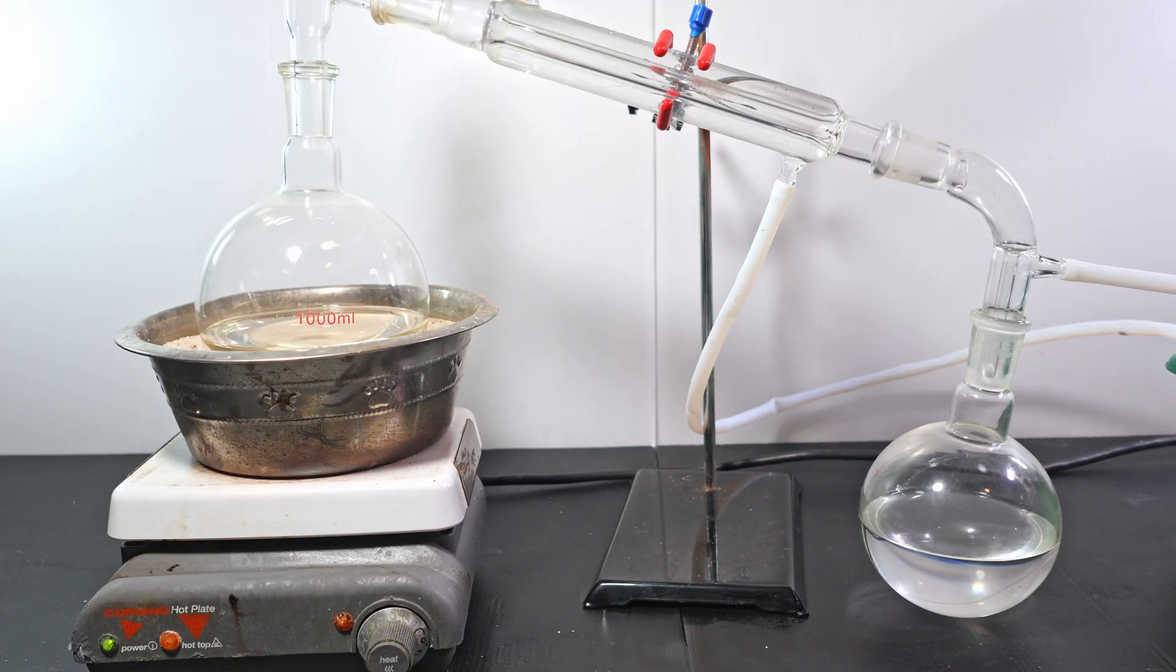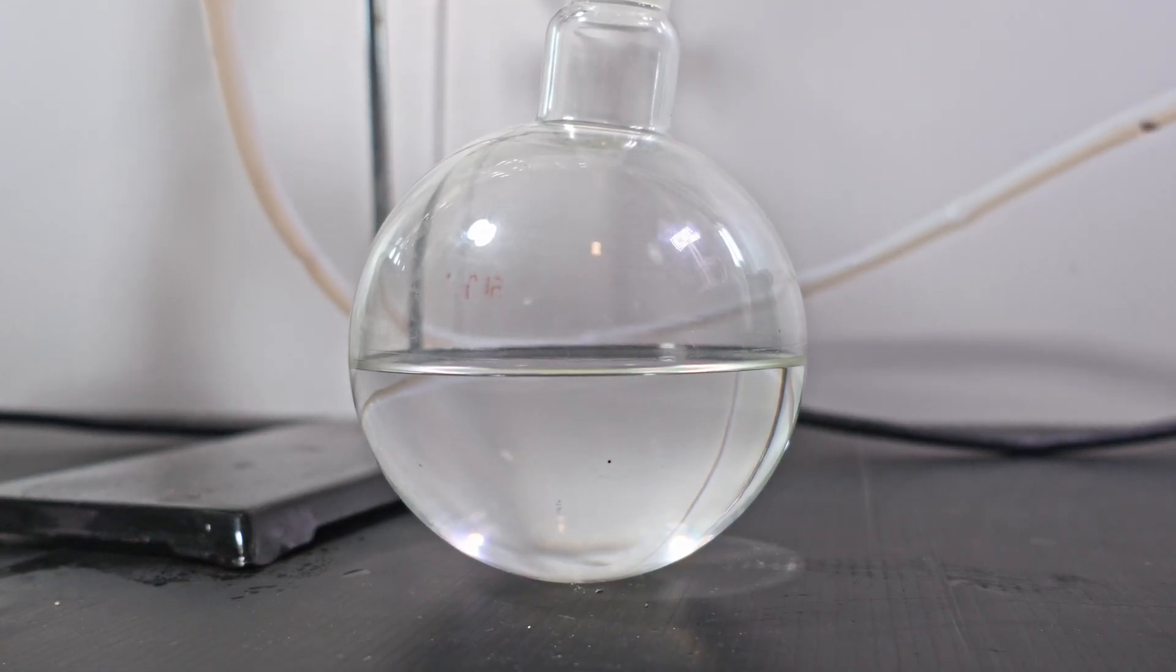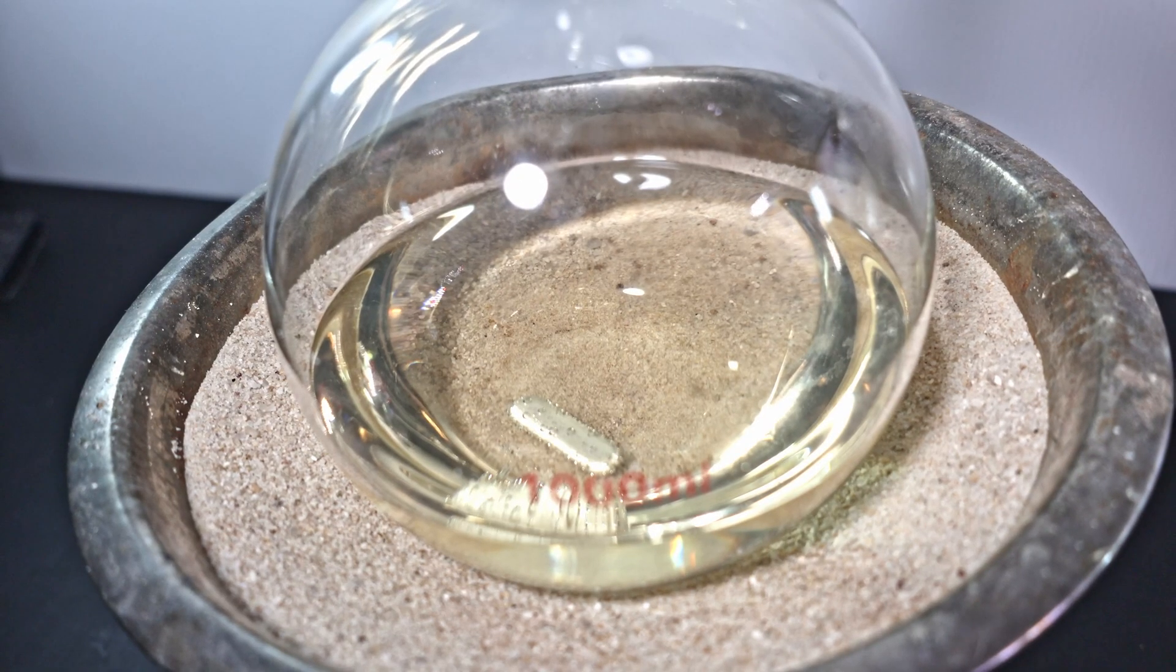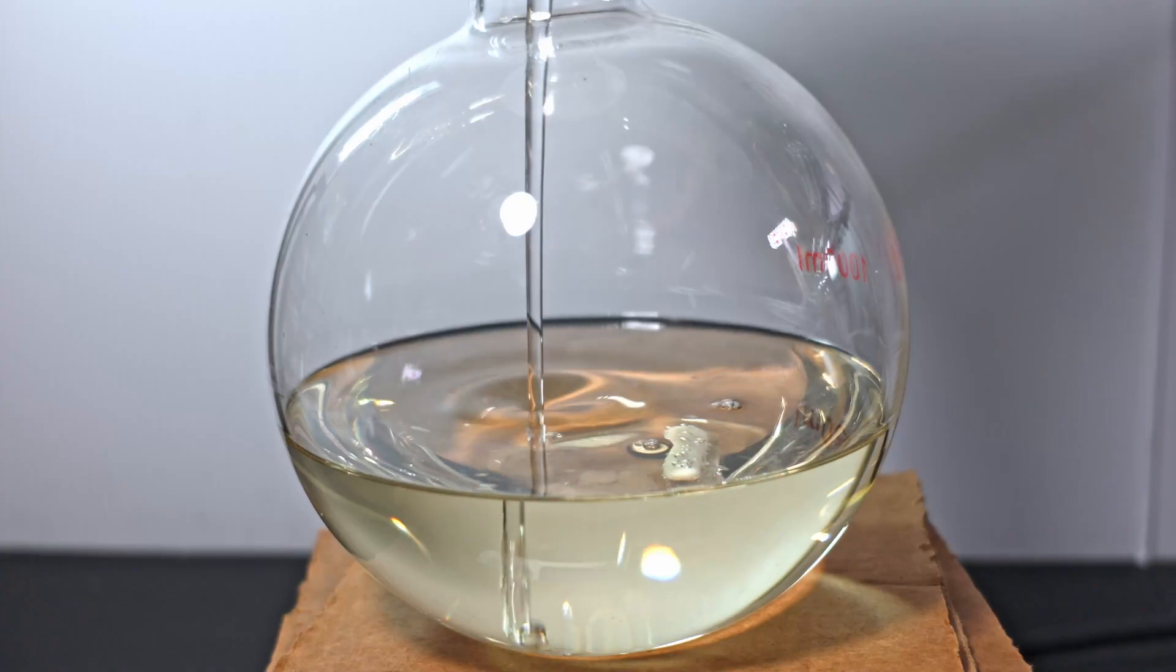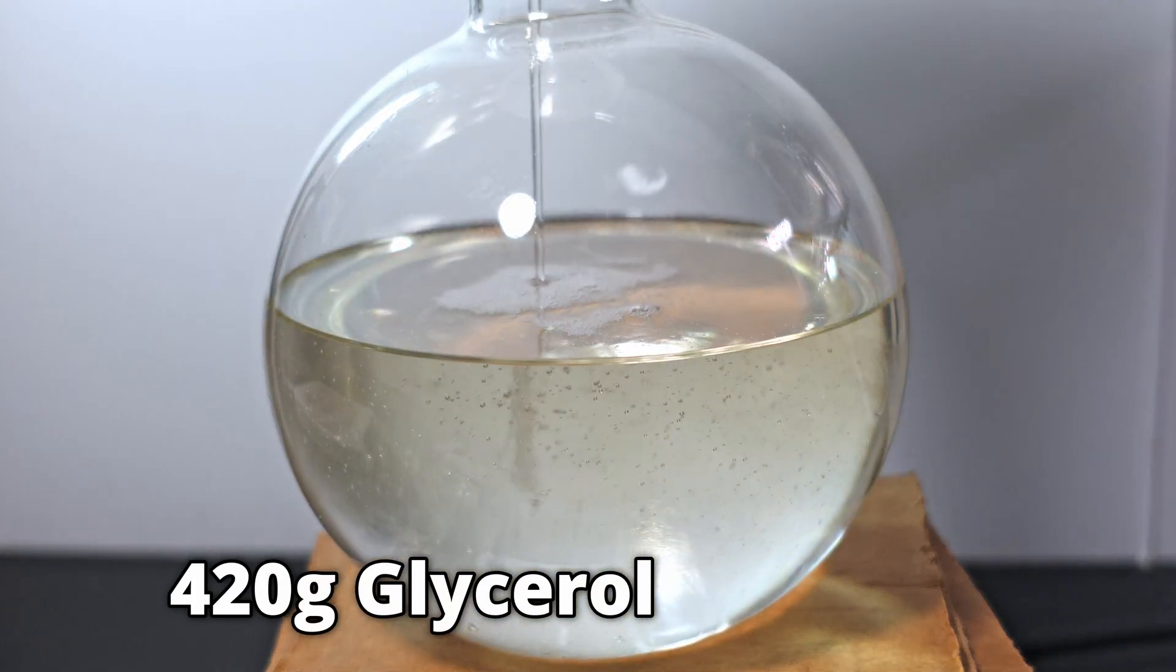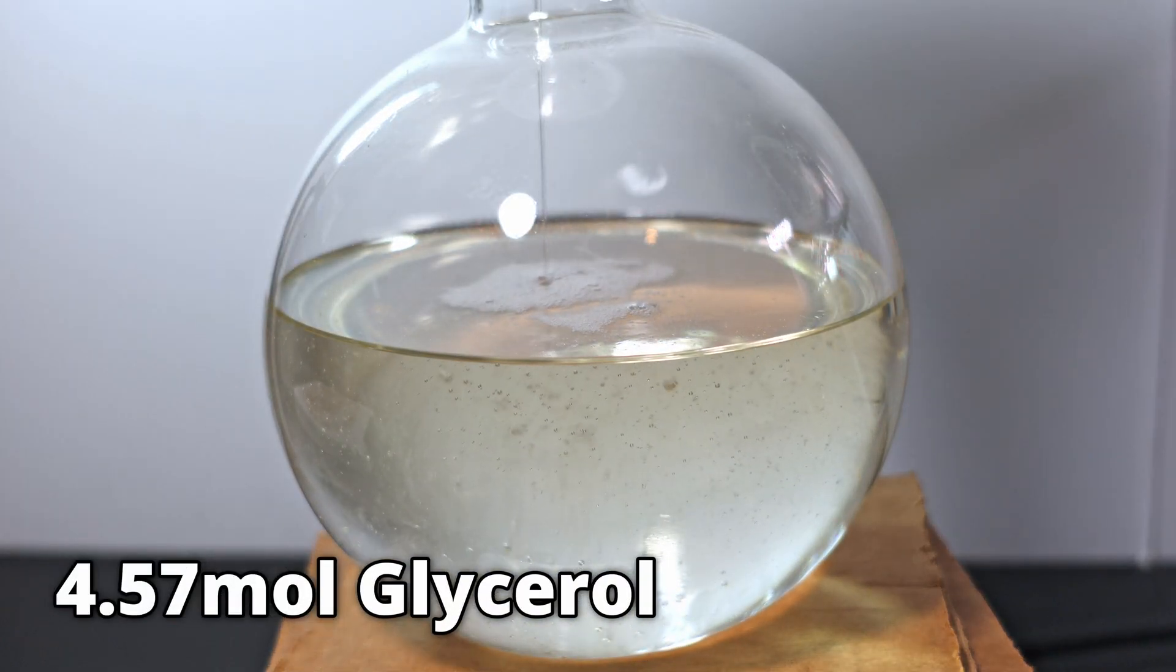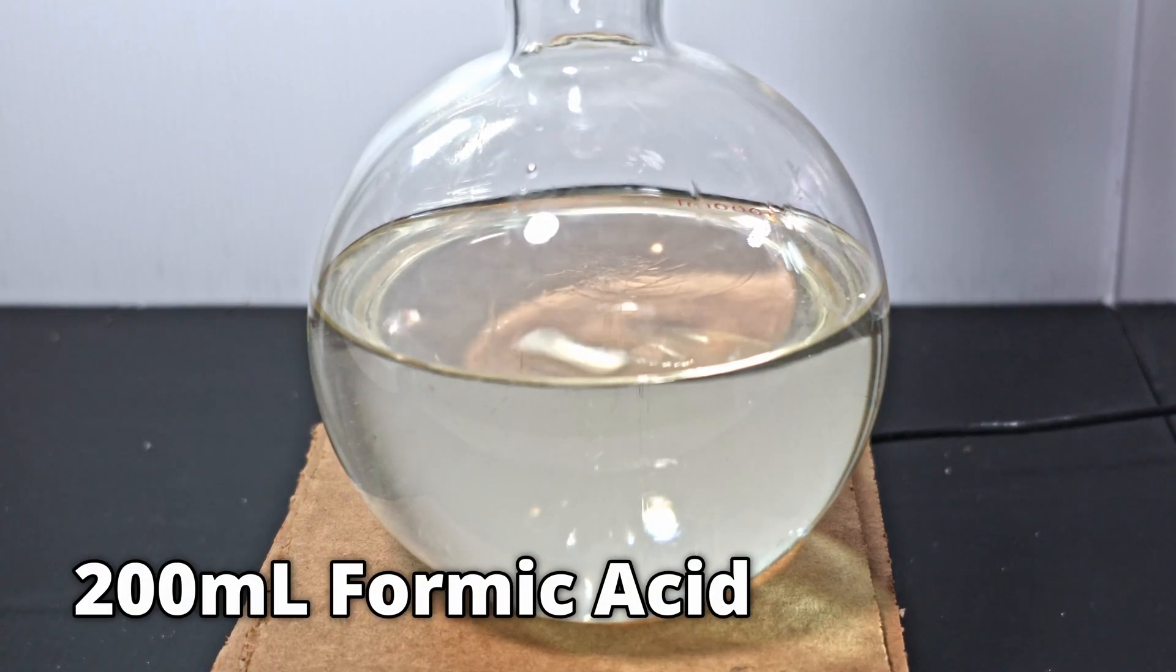After a few hours, I shut it off when no more comes over. I have a pretty good yield so far of crude allyl alcohol. My glycerol has just a little discoloration, but it's still more than good enough for a second run. I add in 420 grams of warm glycerol. This is approximately 4.57 moles of glycerol. I add in another 200 milliliters of formic acid slowly.